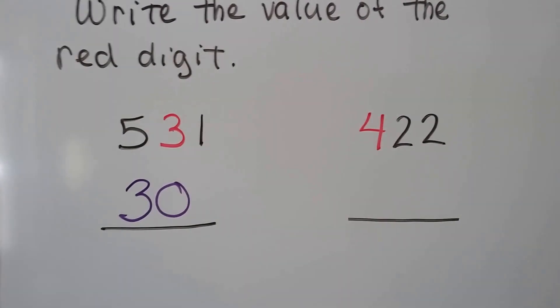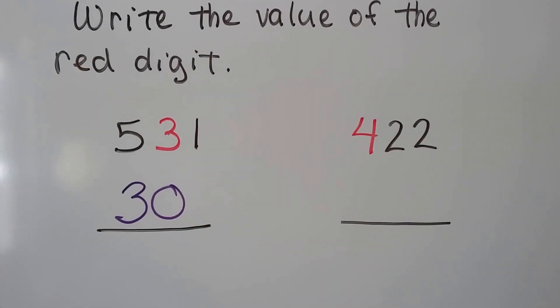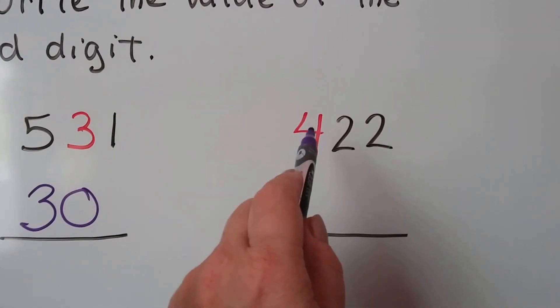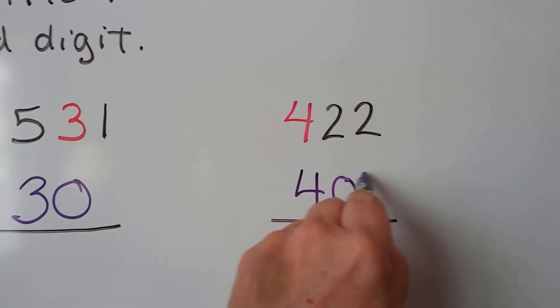How about this one? We have a 4 in the hundreds place. The value of that one digit, of this 4, would be 400.